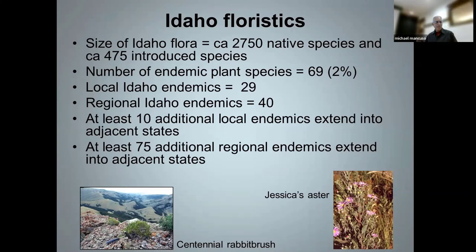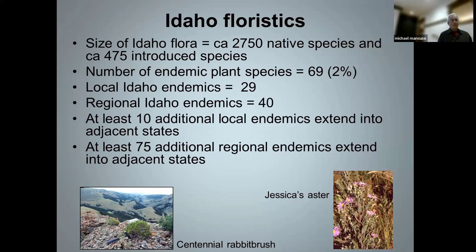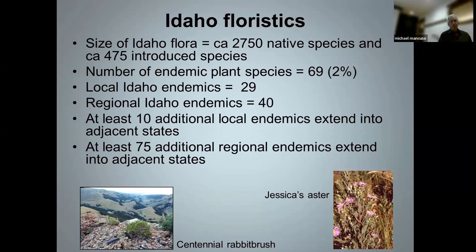Before I get into talking about specific Idaho endemics, I want to go over some general patterns regarding the endemic flora of Idaho. Based on the USDA Plants Database, there are about 3,200 plant species in Idaho. Of those 3,200 or so, a little over 2,700 are native and nearly 500 are introduced species. Based on the second edition of Flora of the Pacific Northwest and Intermountain Flora, we have 69 endemic species in Idaho, which is about 2% of the flora.